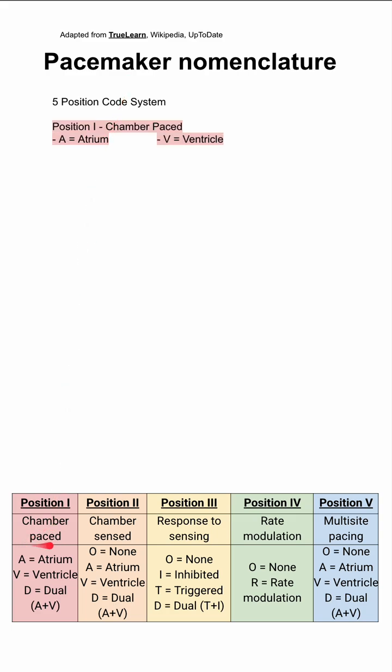The first position is the chamber paced. It can be an A for atrium, V for ventricle, or D for both chambers, the atrium and the ventricle.